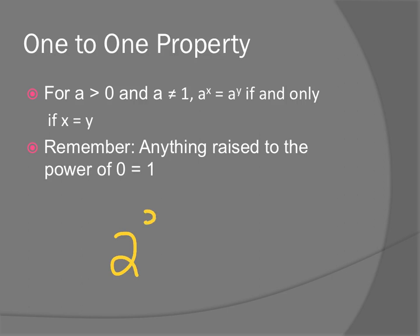So if you had something like 2 to the third equals 2 to the x, both the bases are the same. And when that happens, you literally can totally ignore the bases and just set your exponents equal to each other. And my x would be 3.